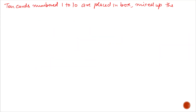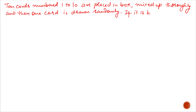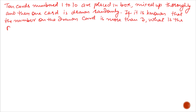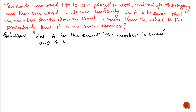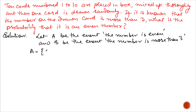Next example. 10 cards numbered 1 to 10 are placed in a box, mixed up thoroughly, and then one card is drawn randomly. If it is known that the number on the card drawn is more than 3, what is the probability that it is an even number? We have to find the probability of an even number. So let A denote even number, and we have already drawn a card more than 3, let B denote the event that the number is more than 3. So A is 2, 4, 6, 8, or 10.